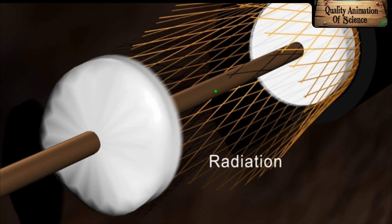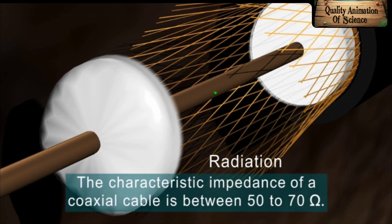This inhibits the attenuation of the wave energy due to radiation. The characteristic impedance of the coaxial cable is between 50 to 70 ohm.